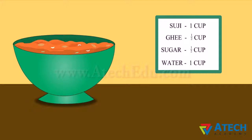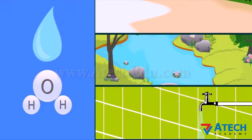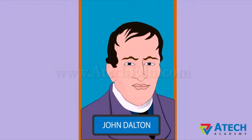To prepare halwa, we need suji, ghee, sugar, and water in a constant proportion. Similarly, in a chemical substance, the elements are always present in a definite proportion by mass. For example, water is made up of two atoms of hydrogen and one atom of oxygen. No matter where we take water from — sea, river, or domestic tap — it is always made up of two atoms of hydrogen and one atom of oxygen.